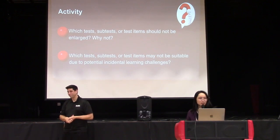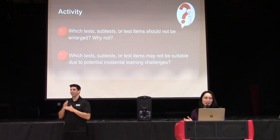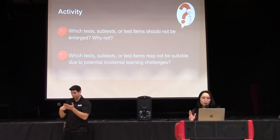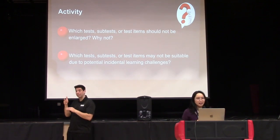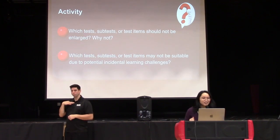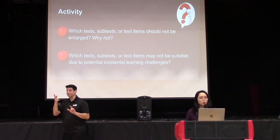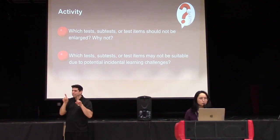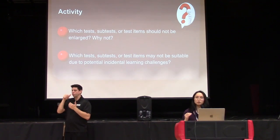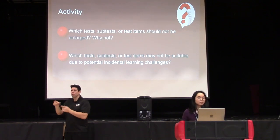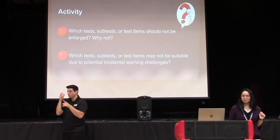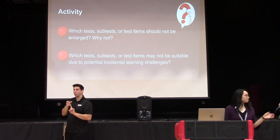For our pair-share activity, turn to your tablemates and discuss: which tests, subtests, or test items shouldn't be enlarged and why? And which tests, subtests, or test items may not be suitable due to potential incidental learning challenges — learning that happens through casual observation, things not explicitly taught? See if you can come up with specific examples from tests.